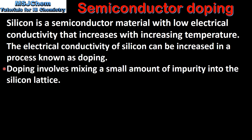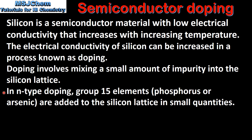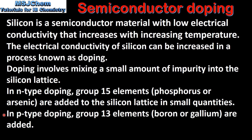Doping involves mixing a small amount of impurity into the silicon lattice. In N type doping, group 15 elements such as phosphorus or arsenic are added to the silicon lattice in small quantities. In P type doping, group 13 elements such as boron or gallium are added.